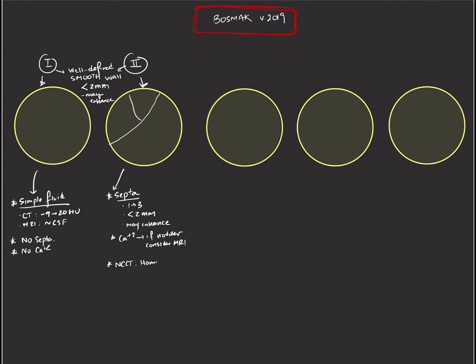On non-contrast CTs, Bosniak 2 cysts will be called when we see a mass that's homogeneously hyperdense. That means a Hounsfield unit internally of greater than 70 Hounsfield units. On MRI, this would manifest as hyper-intense T1 signal that appears in an otherwise homogeneous mass, and there's at least one study that shows that if that T1 signal within the renal cyst is at least 2.5 times greater than the parenchymal signal within the renal parenchyma, then we can confidently call it a Bosniak 2 cyst.